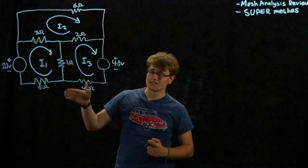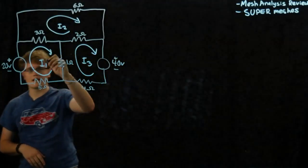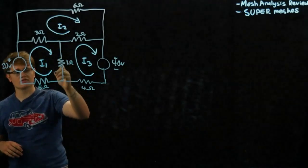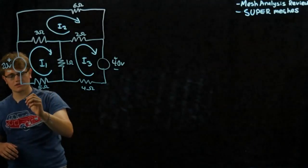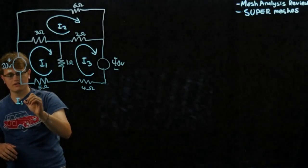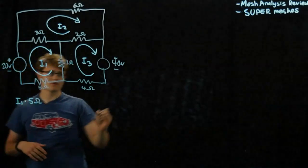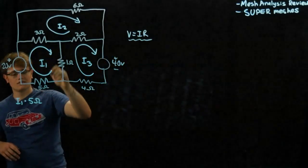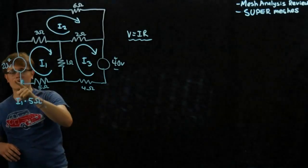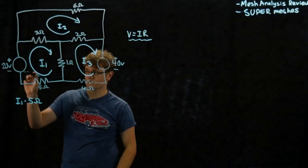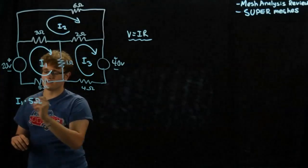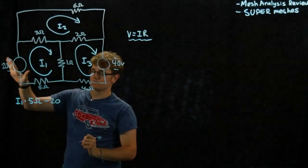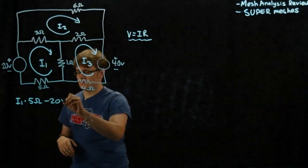Let's start with I1. Going around this loop, it first goes through this 5-ohm resistor, so the voltage is I1 times 5 ohms, because V = IR. Then we come to this constant voltage source — that's 20 volts. We're going into the negative side, so we subtract 20 volts. If we were going into the positive side, we would add it.